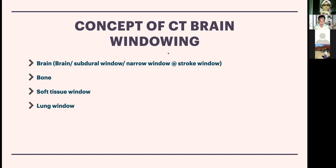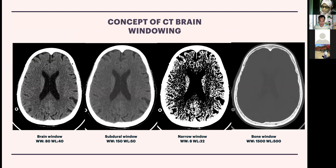Windowing is a post-processing technique where you highlight certain structures and suppress others. For brain window you are highlighting the brain and suppressing bone. You also have subdural window to look for subdural bleed, and the narrow or stroke window — which is important for stroke. Other windowings include bone window, soft tissue window, and lung window. Unfortunately not all hospitals have this capability; some emergency departments only provide printed films in brain and bone window.